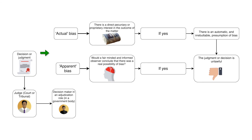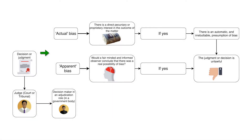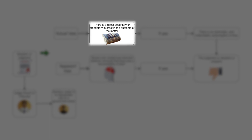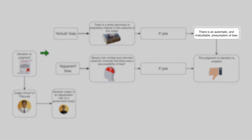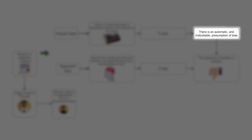So the summary for this topic on the judiciary and unbiased and impartial decision making is: you have a decision or judgment, whether by a judge, court or tribunal, or a decision maker in an adjudication role in a government body. Then you have two possibilities where there is bias. First, actual bias — these cases are very rare. It is where there is a direct financial or proprietary interest in the outcome of the matter. If there is, then there is an automatic and irrebuttable presumption of bias, and the judgment or decision is unlawful.